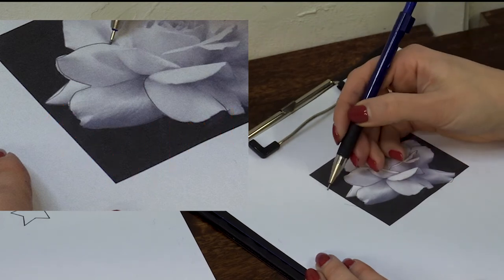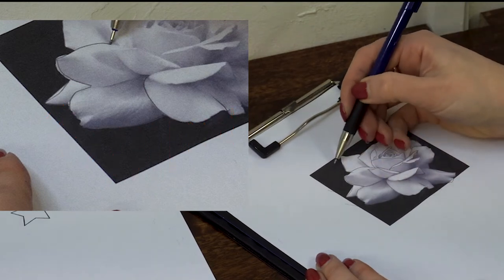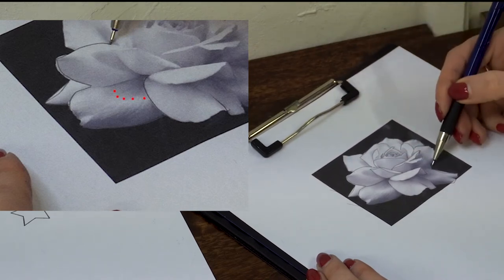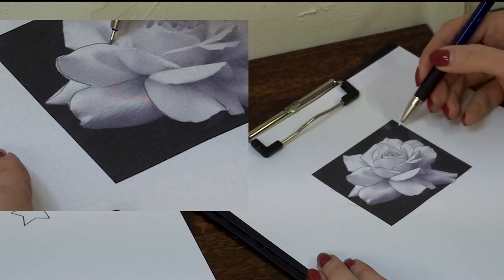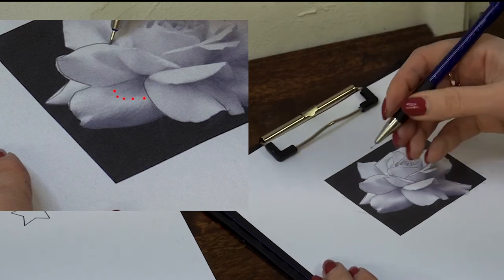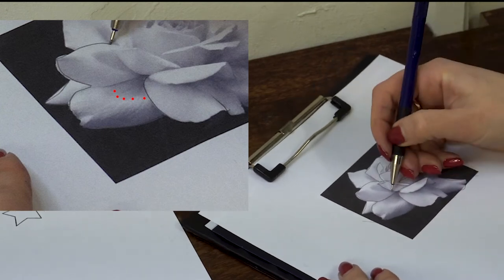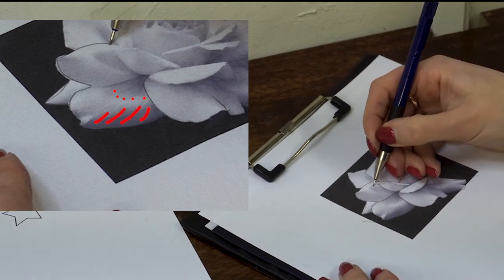On the petals I'll mark the edge of the shadow with little dots. You can also show direction of how the shadow falls with the lines.